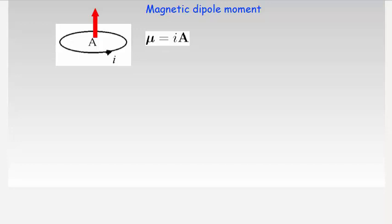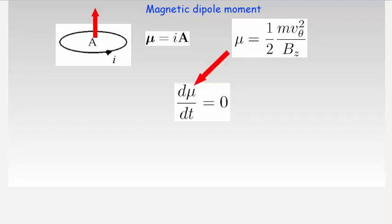In class, we will show how this definition can result in this form of the magnetic moment, which consists of the ratio between the kinetic energy and the magnetic field. In addition, we will show that the magnetic moment is a conserved quantity, and therefore remains constant no matter where the charged particle is in the field, as long as there are no discontinuities in the field.